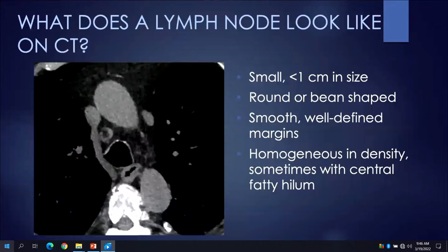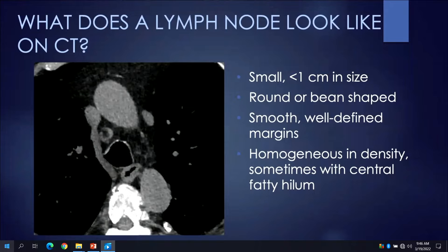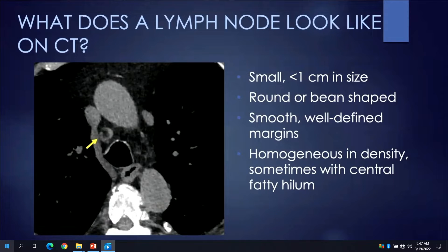What does a lymph node look like on CT? These are small, less than one centimeter structures. Dependent upon the orientation of the CT slice to the long axis of the lymph node, it will appear as either round or bean-shaped. Typically they have smooth, well-defined margins, are homogeneous in density, and sometimes have a central fatty hilum.